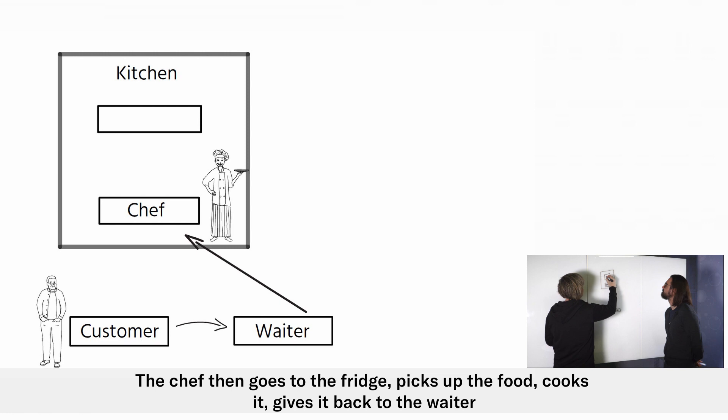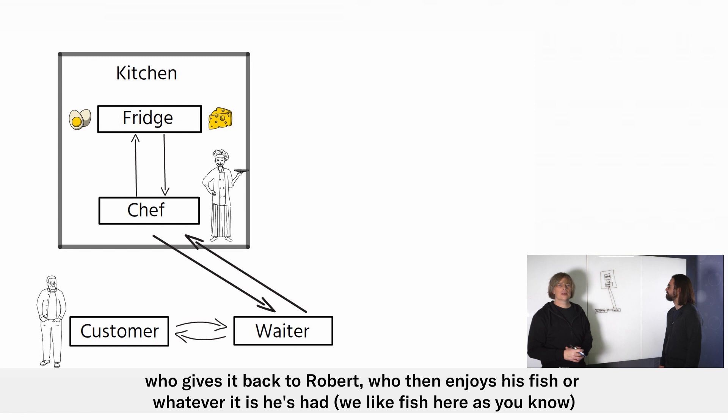The chef goes to a fridge, picks up the food, cooks it, gives it back to the waiter who gives it back to Robert who enjoys his fish or whatever it is he's had. We like fish here as you know.